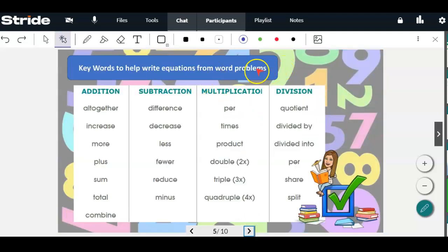So keywords to help write equations from word problems. Because we will be translating the words into number sentences. So here's addition words. I'm not going to read all these. These are in ClassKick as well. Here's subtraction words. We have multiplication words. And then the last column, division words. So these are important to know and how to translate.